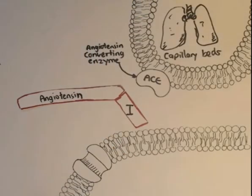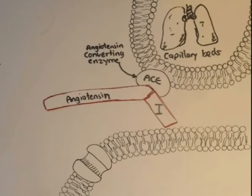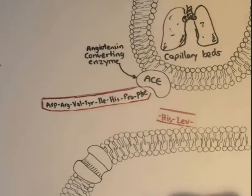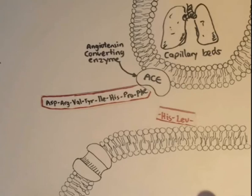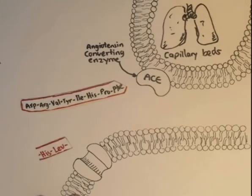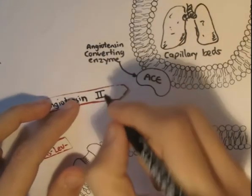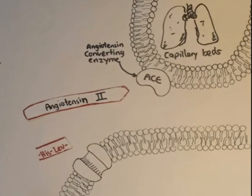What ACE does is it converts angiotensin-1 to angiotensin-2. Angiotensin-1 binds to its activation site, and then the end bond — the histamine and leucine bond — gets cleaved off the decapeptide, creating the remainder octapeptide, the 8-unit peptide, also known as angiotensin-2.